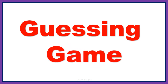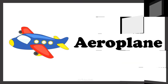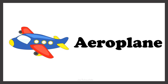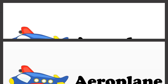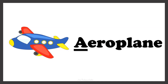Now let's play a guessing game to check your understanding of the articles A and AN. Here we have a picture of AEROPLANE. Find the article that needs to be placed in front of the word AEROPLANE. AEROPLANE starts with the vowel A, so we must use the article AN. So we call it AN AEROPLANE.